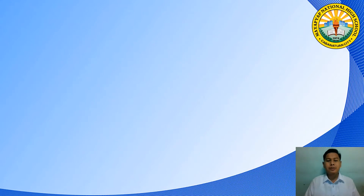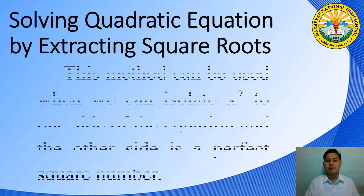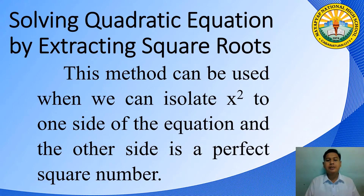The first method is solving by extracting square roots. This method can be used when we can isolate x squared to one side of the equation and the other side is a perfect square number.